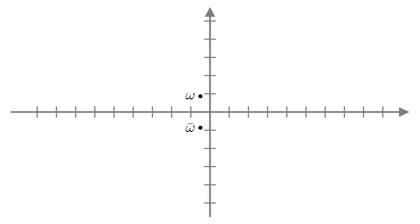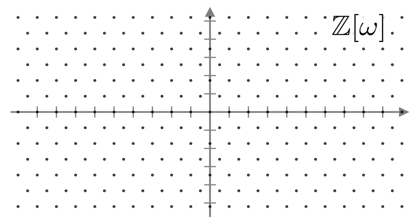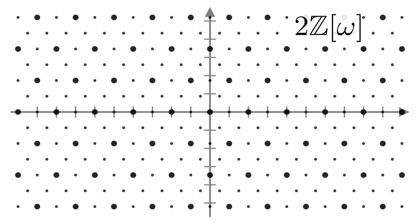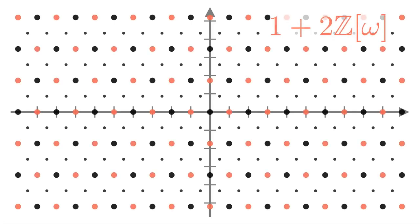Now we've got Z brackets omega. Now this is the equilateral triangular lattice. And I'm quotienting by two times Z brackets omega. So I'm going to highlight everything that's double something in this ring. Now this represents zero in the quotient ring. Then we can shift this over by one. And that represents one in the quotient ring.